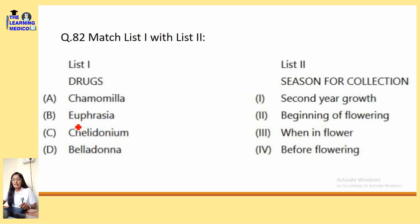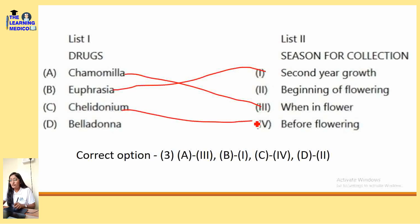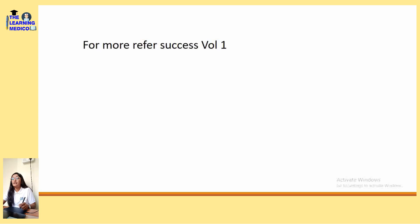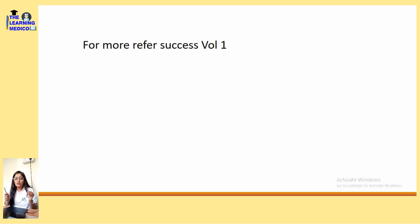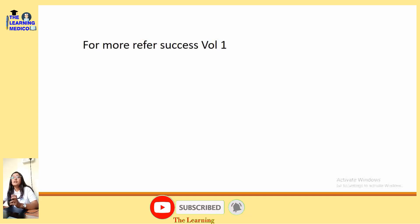Match the following drugs and season of collection. Chamomilla is collected when in flower. Euphrasia is collected in the second year of growth. Chelidonium is collected before flowering. And Belladonna is collected at the beginning of flowering. For pharmacy theory, Success Volume 1 is very good because the number of items in it is comprehensive. Pharmacy is a scoring subject and you can go and learn pharmacy from Success Volume 1, which is better than Kaizen.